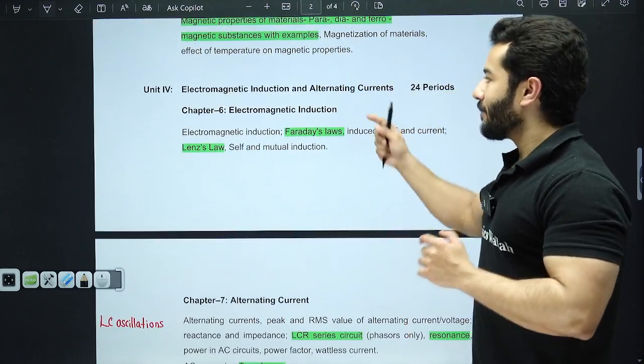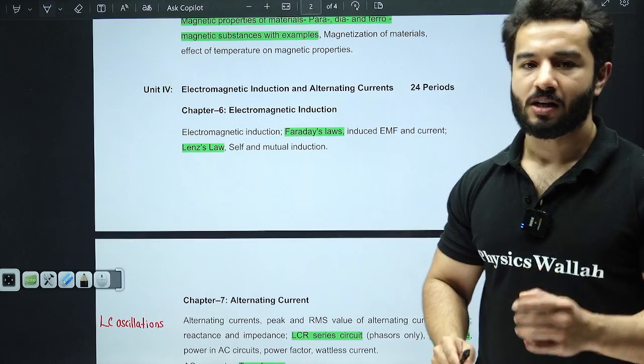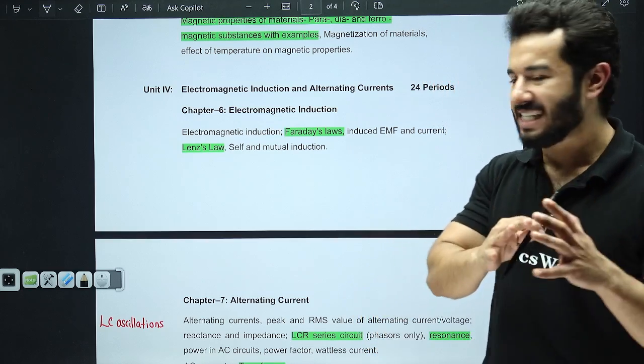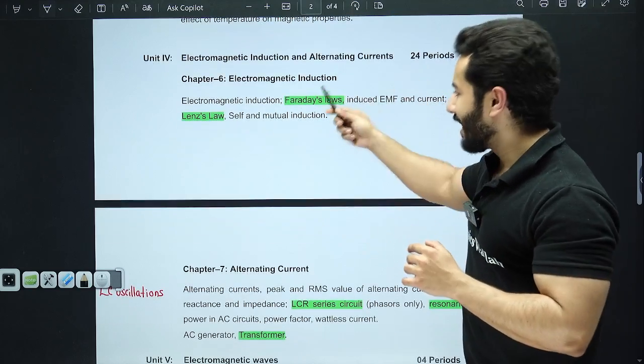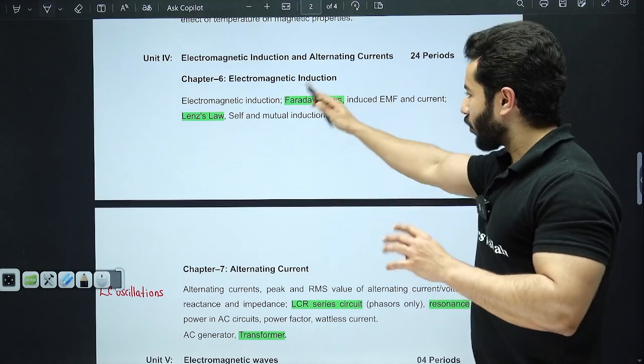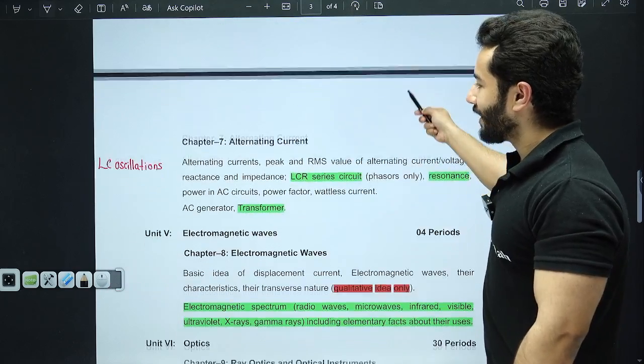Magnetic properties of materials is very important—that means paramagnetic, diamagnetic, ferromagnetic substances with their examples. This is extremely important for your MCQs and for normal questions as well. Moving on, from electromagnetic induction, Faraday's laws and Lenz's law hold the most importance. These two things are the most important. Self and mutual inductance is definitely important, but still, out of all of these, if I have to choose two, I am going to choose these two.